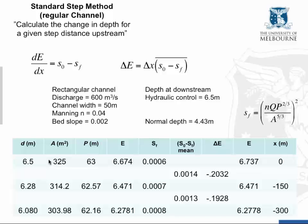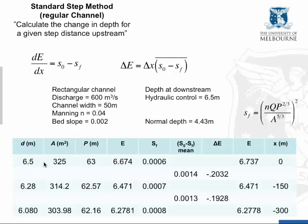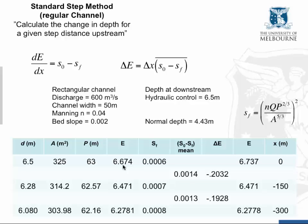Here is the solution using the standard step method. Rather than a fixed change in water depth, we have a fixed step distance — in this case 150 meters per step. Starting from the known depth of 6.5 meters at the hydraulic control, we calculate the specific energy and energy gradient using Manning's equation. The specific energy at the downstream end is 6.674.